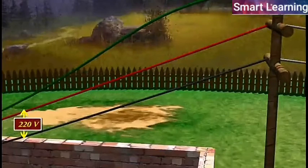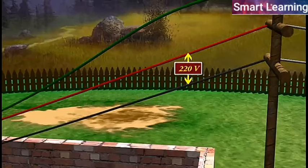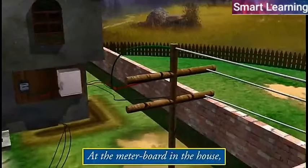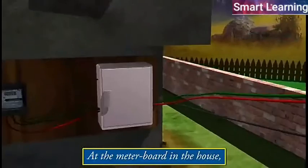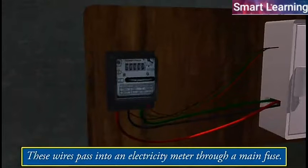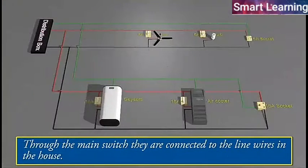In our country, the potential difference between the two is 220 volts. At the meter board in the house, these wires pass into an electricity meter through a main fuse. Through the main switch, they are connected to the line wires in the house.